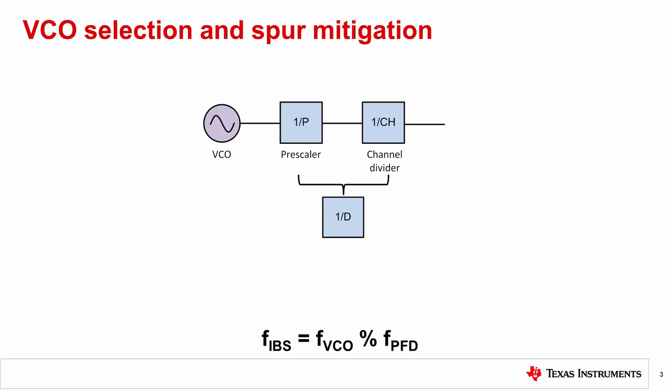When it comes to VCO frequency selection, spur mitigation is usually an important goal. In this training section, we will focus on integer boundary spurs, or IBS. IBS is calculated by VCO frequency modulo phase detector frequency.